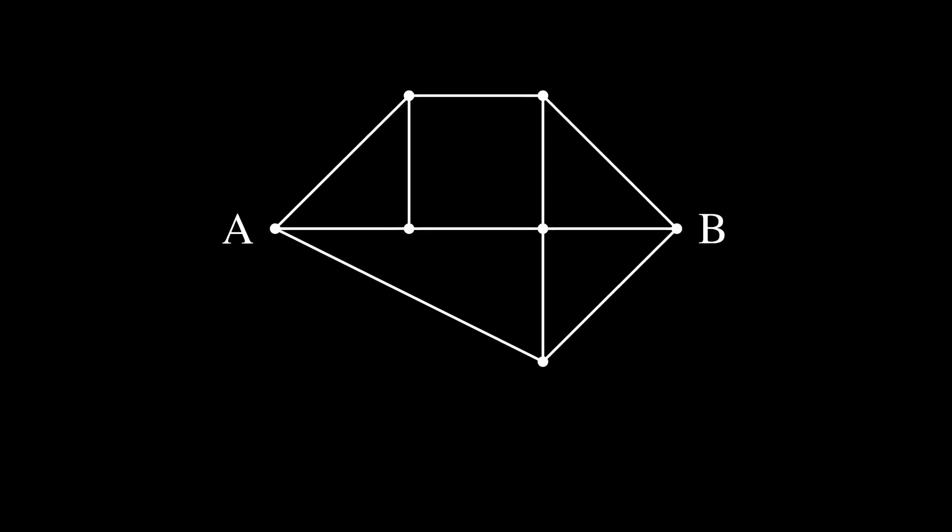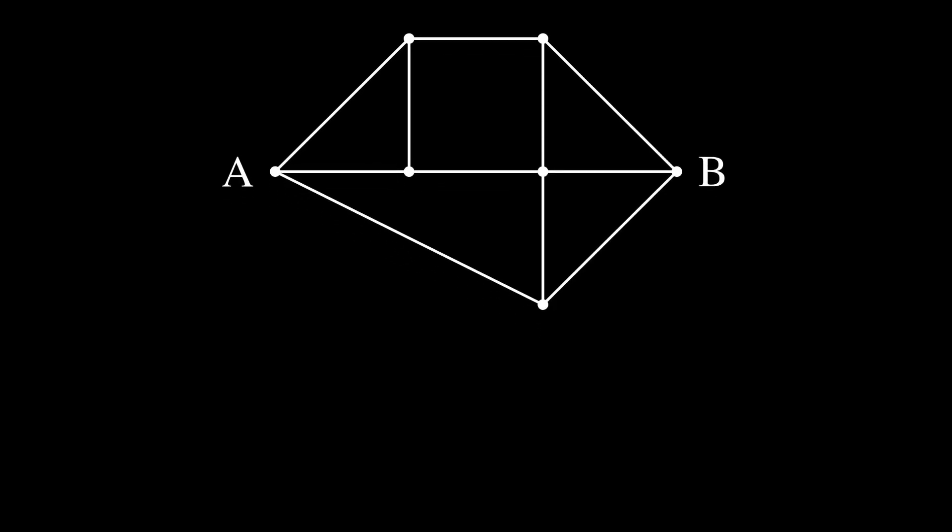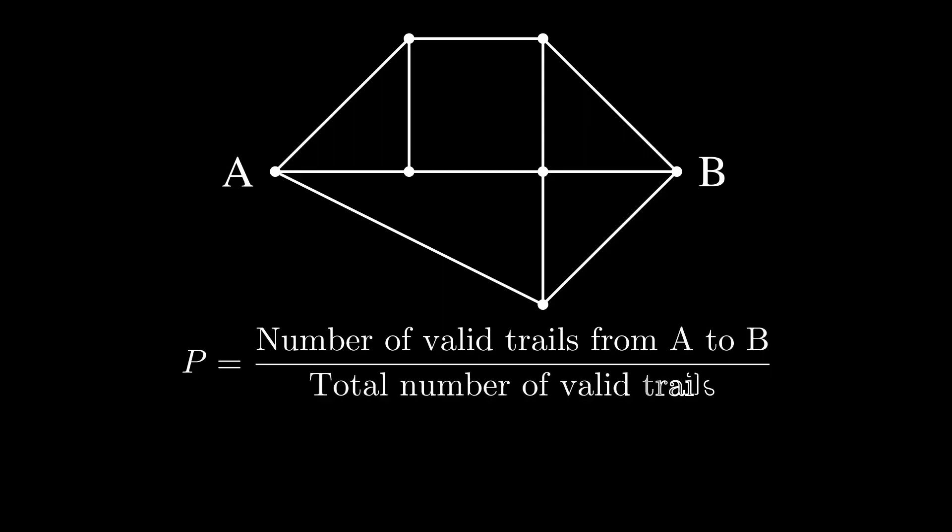To begin solving this problem, we must first identify the values that we need. Let's begin by writing an equation for it. We need to find all possible trails from A to B, and divide it by the total number of all possible trails starting from A. So how do we find these values?